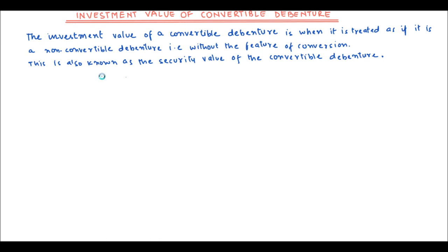As you know, in a convertible debenture there is an option to convert the debenture from a debt instrument into a stock of the company. Now if that conversion feature is not there, the value of the convertible debenture in that case is known as the investment value, also called the security value. These are different terminologies used to denote the same thing.